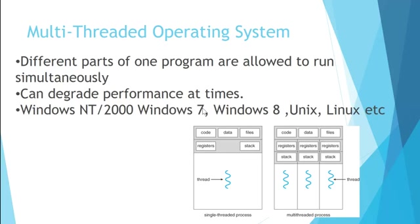In a multi-threaded operating system, different parts of a program are allowed to run simultaneously. Normally when you write code there is only one execution happening, but in multi-threaded code, different parts run simultaneously. The negative point of this is that it degrades performance at times, because within one program it is trying to run more than one part or thread of that program.